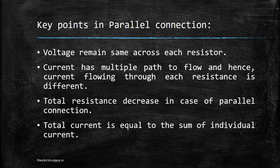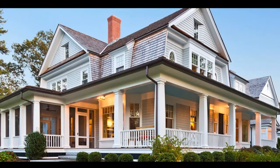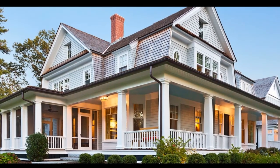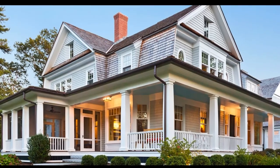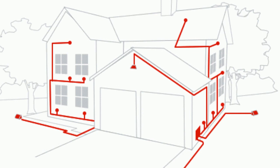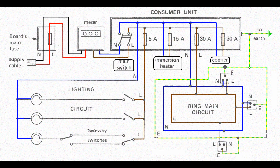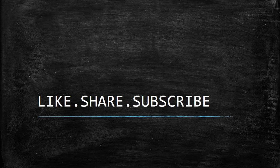The biggest application of parallel connection is the wiring in our homes. Home wiring is in parallel because the equipment we use every day is designed for a standard voltage — 230 volts in India, which may differ by country — while the current of each equipment is different. This can be satisfied by parallel connection only, which is why our homes are designed with parallel connection.